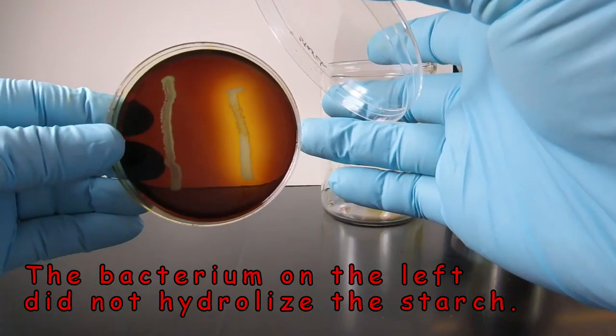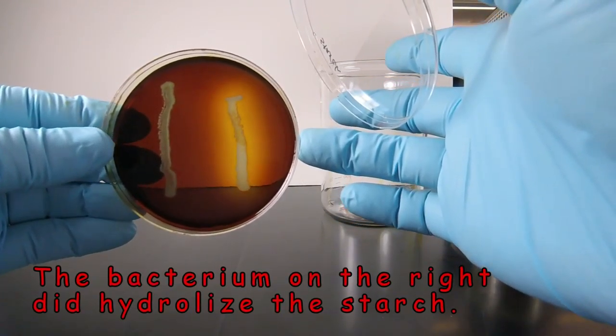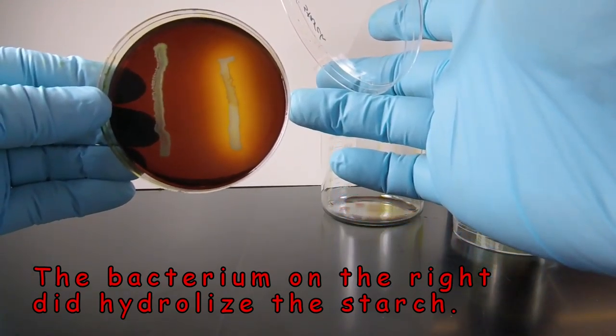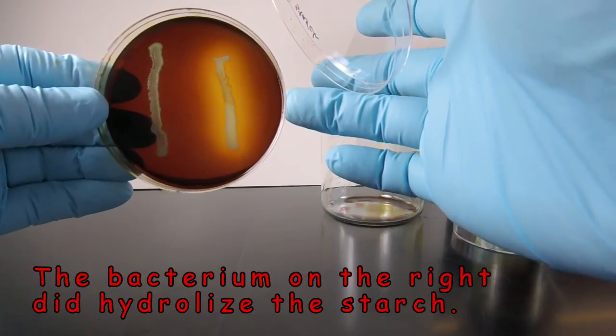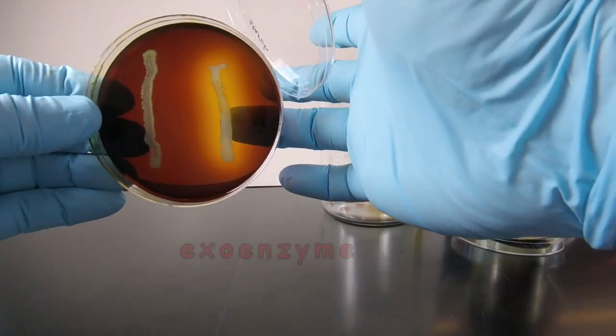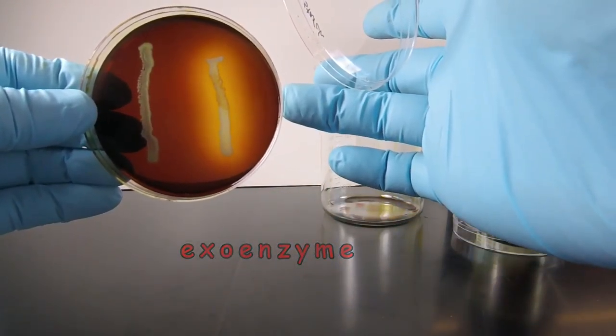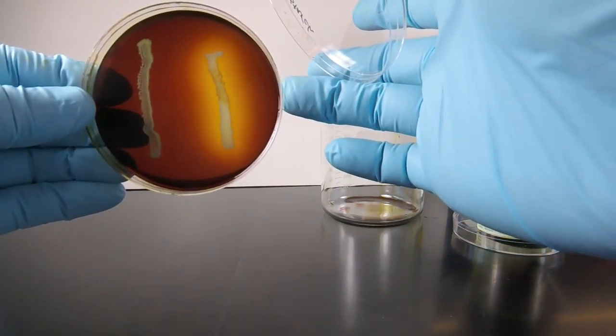On the other hand, if we look at the organism on the right, we see a clear zone extending out from beyond the growth, and it's clear because there's no longer any starch present there to react with the iodine. So that bacterium produced an exoenzyme that hydrolyzed the starch. The organism on the right hydrolyzes starch, the one on the left did not.